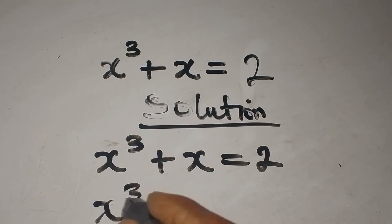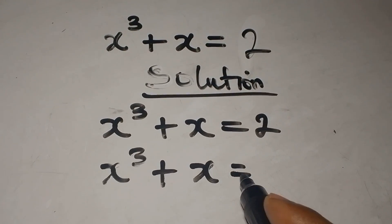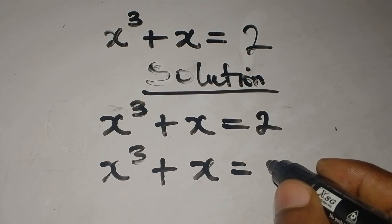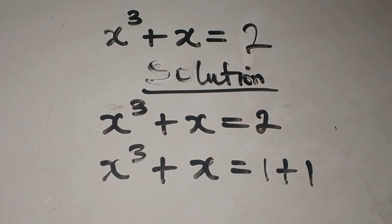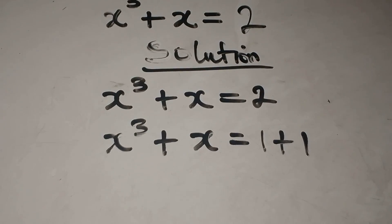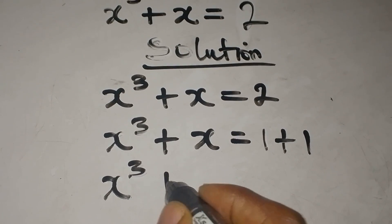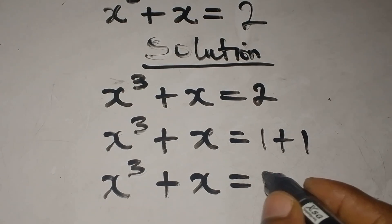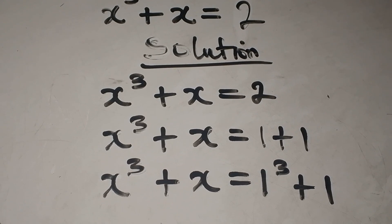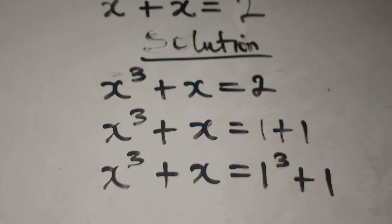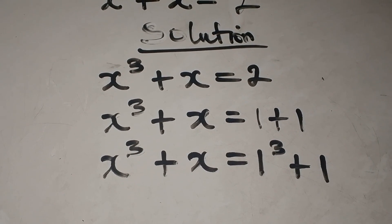What I want to do is to balance the left hand side and the right hand side. On the left I have 2, but I can write 2 as 1 plus 1. So I can express this as x to the power of 3 plus x equals 1 to the power of 3 plus 1. We can now compare and see that the real solution is x equals 1.